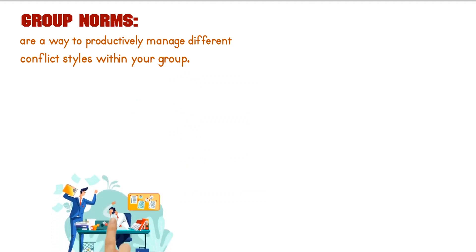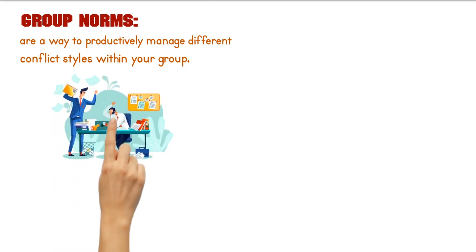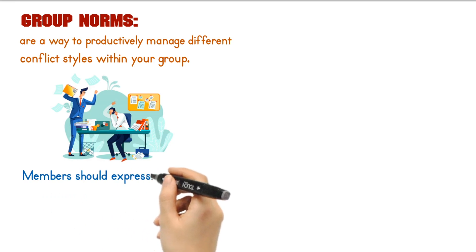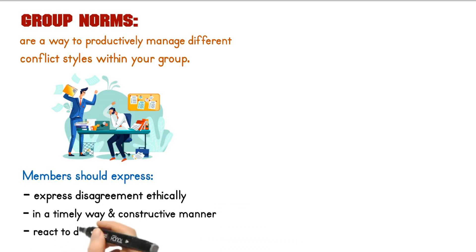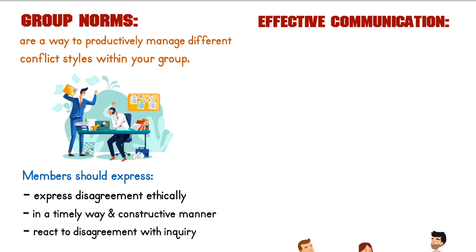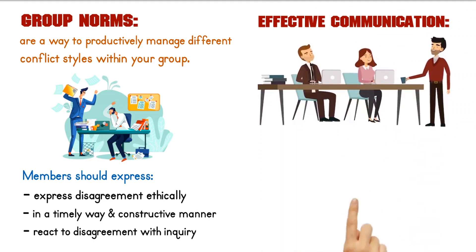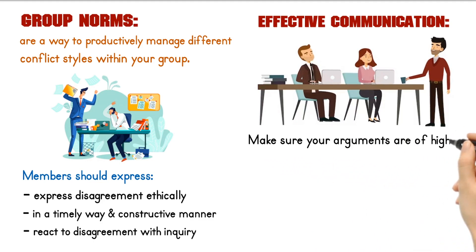Managing conflict is also a cultural phenomenon. The manner in which you disagree can affect how the conflict unfolds. All group members should express disagreement ethically, in a timely way, in a constructive manner, and react to disagreement with inquiry. Effective communication can also maximize your chances of influencing the group in a positive way. Make sure your arguments are of high quality and consistent. If you are a member of a subgroup, make sure all the subgroup members publicly agree with one another.